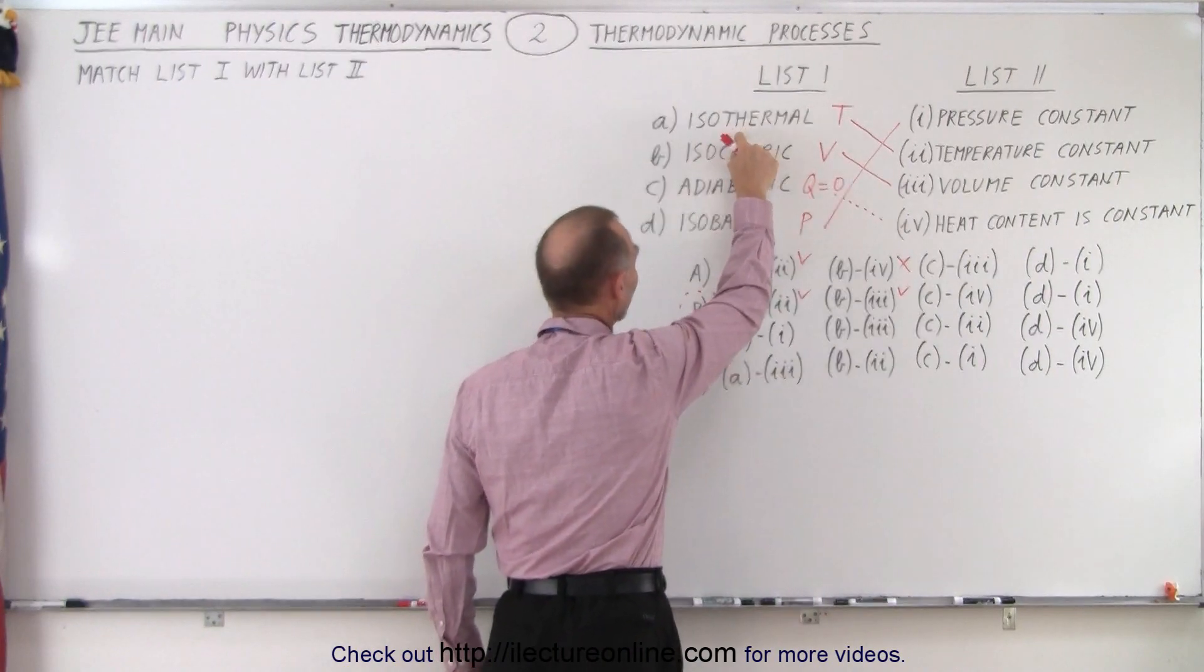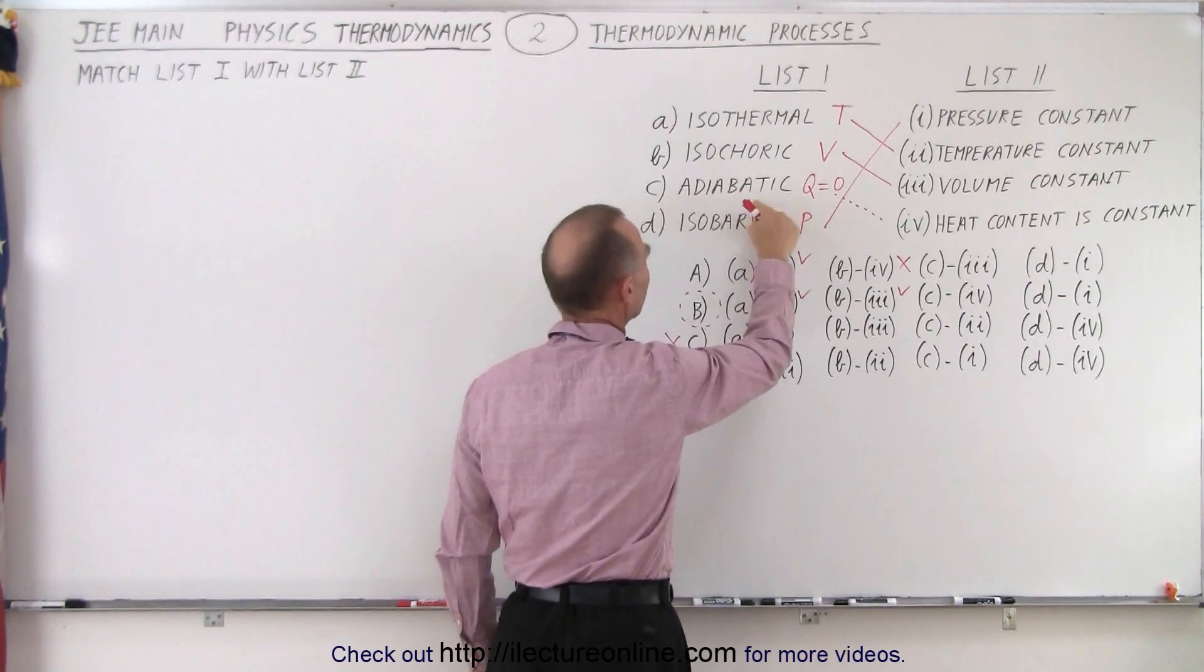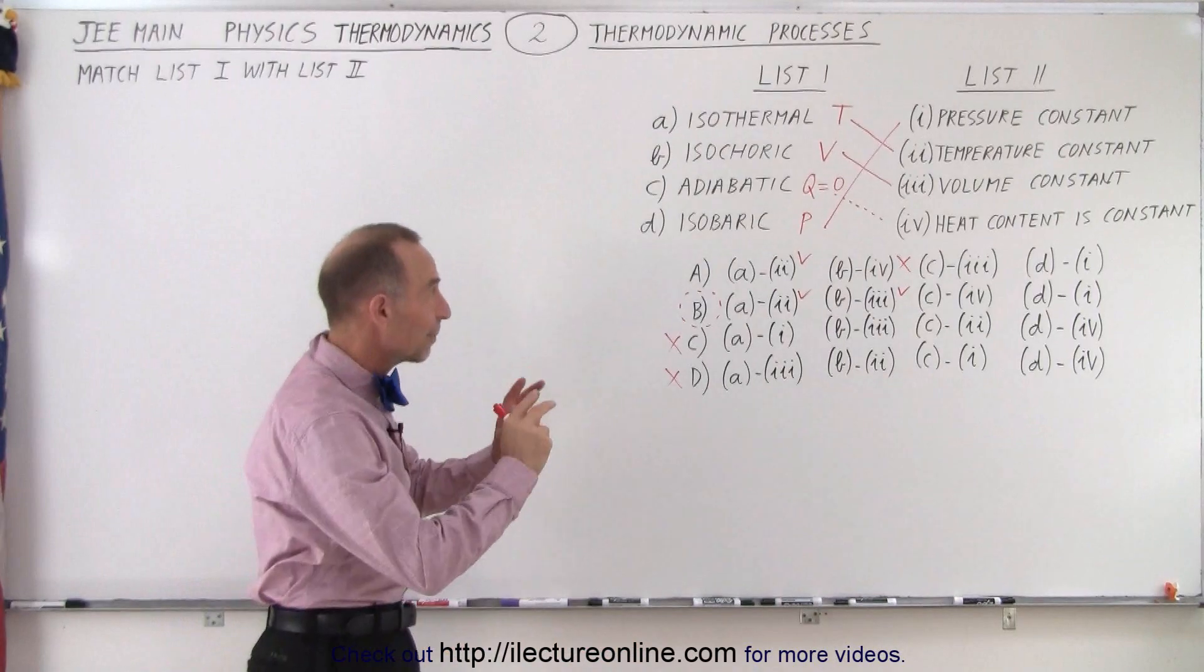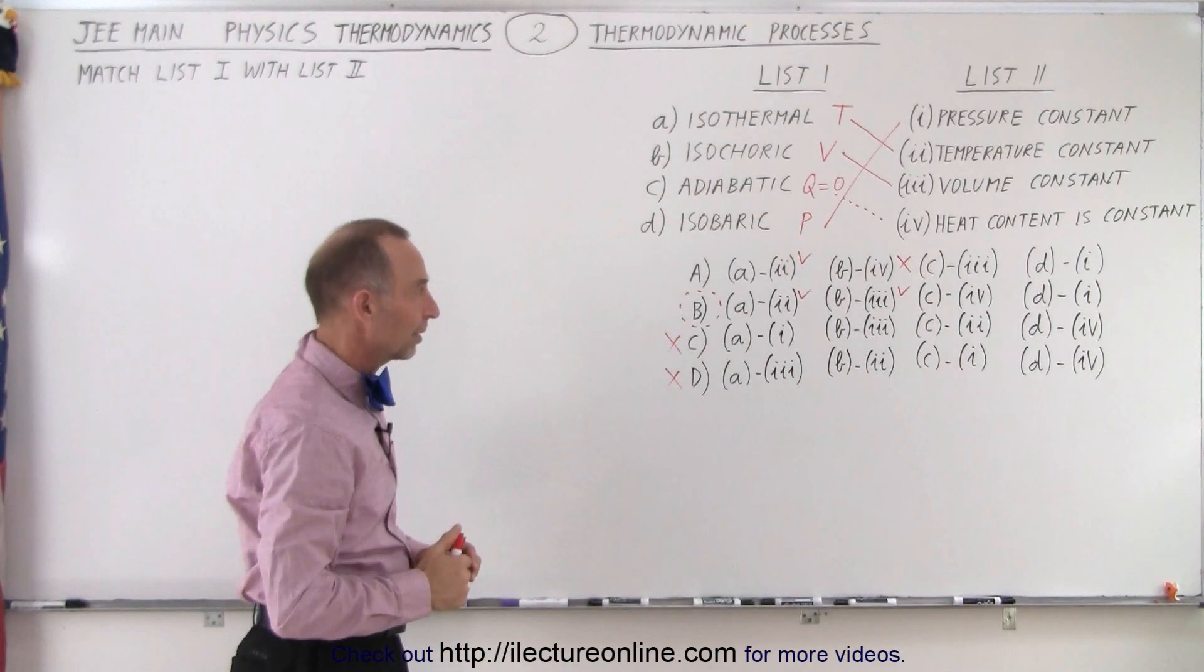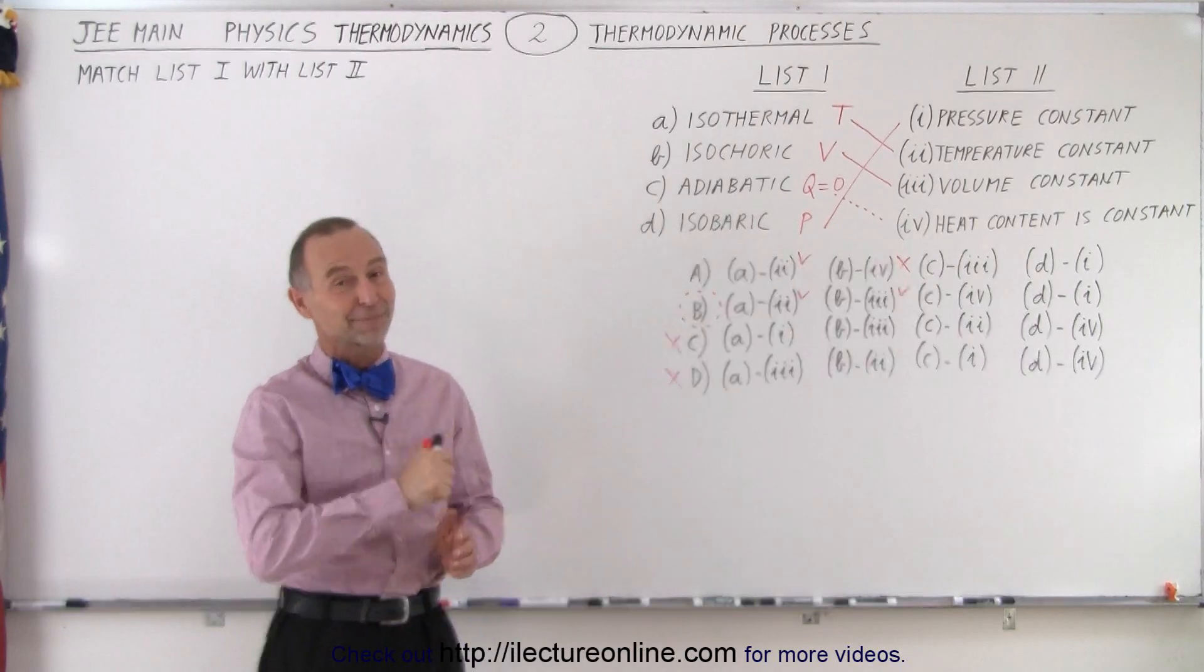You remember that isothermal means temperature, isochoric means volume, isobaric means pressure, and adiabatic means that Q equals zero. If you know that right off the bat, then the rest of the problem is relatively easy, and you can crank it out pretty quickly. And that is how it's done.